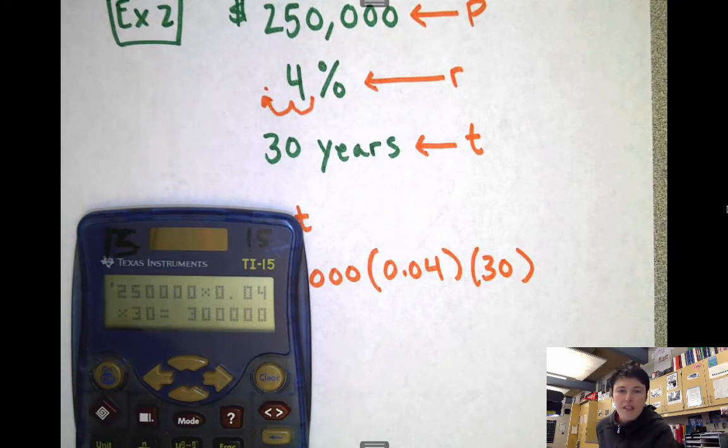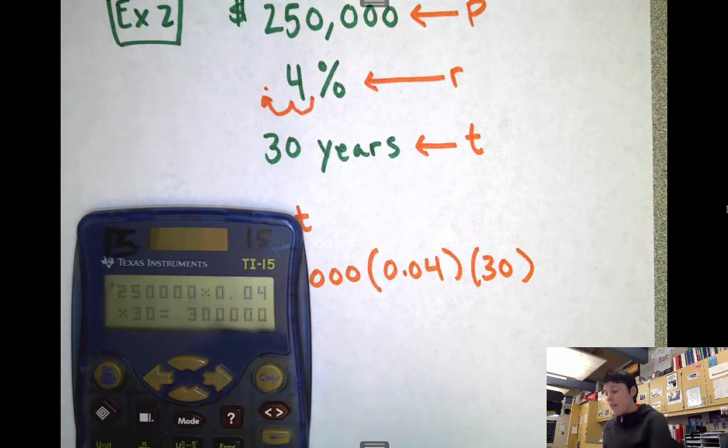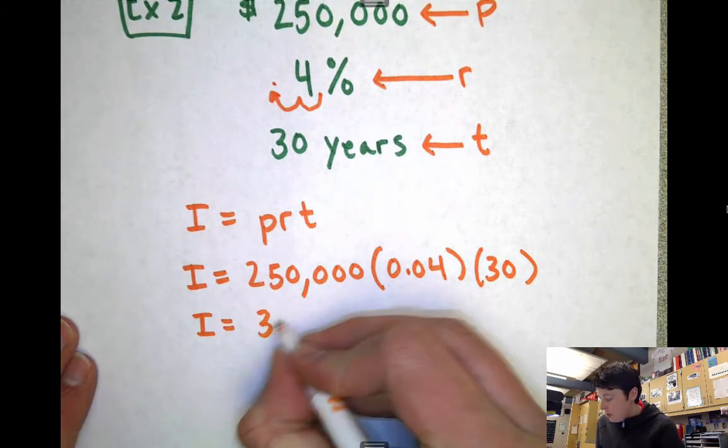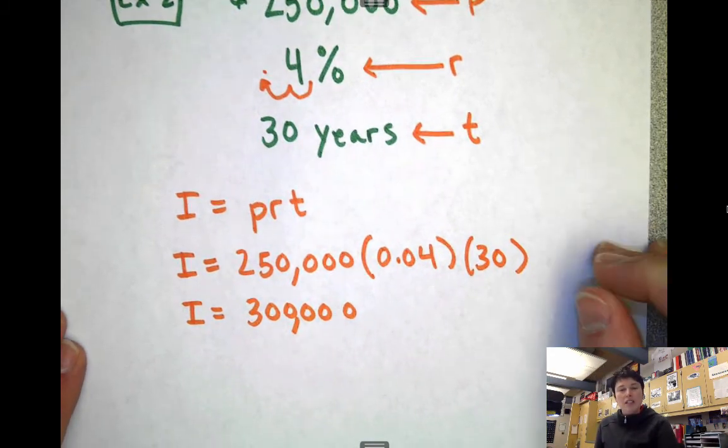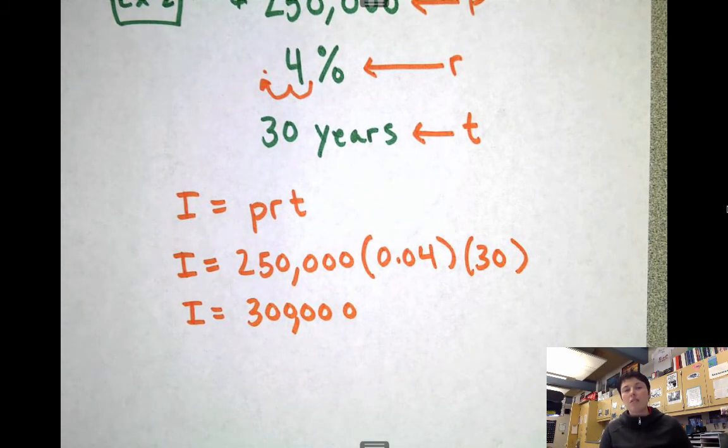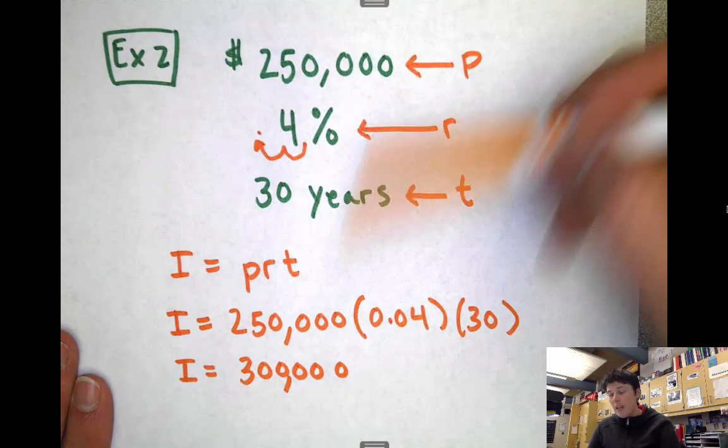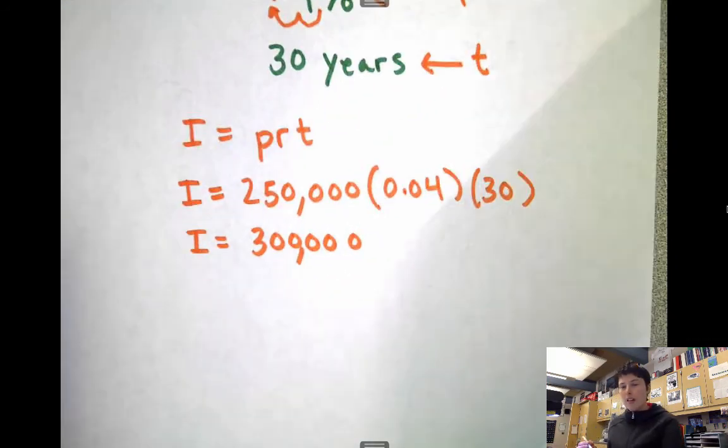Wow, check that out. That is a lot of zeros. I see 1, 2, 3, 4, 5 zeros. Check this out. You're going to pay an extra $300,000 worth of interest. Can you imagine? $300,000 of interest. The house only costs you $250,000, but you have to pay the bank an extra $300,000. Think about the total cost of your house.